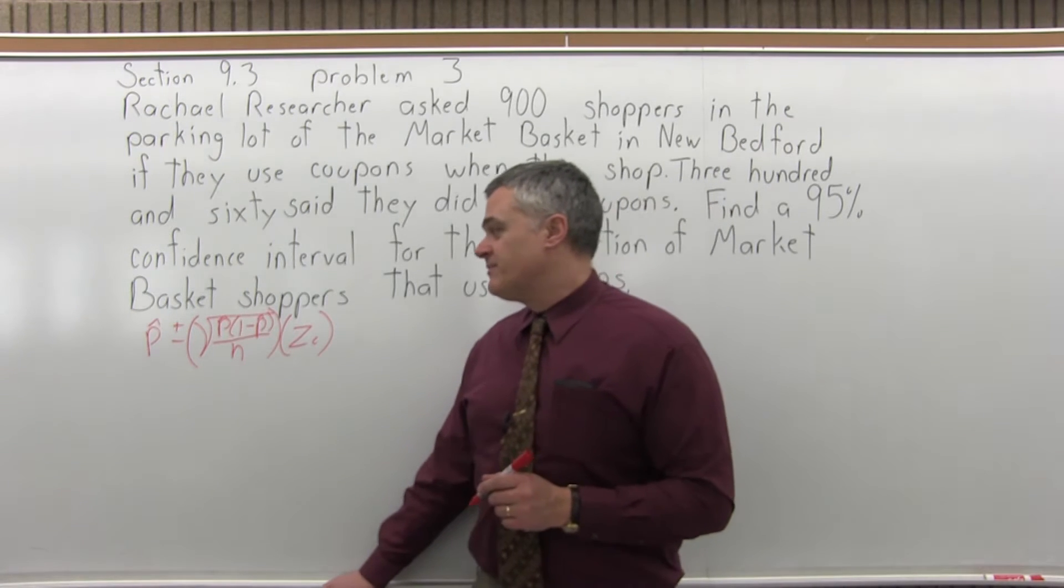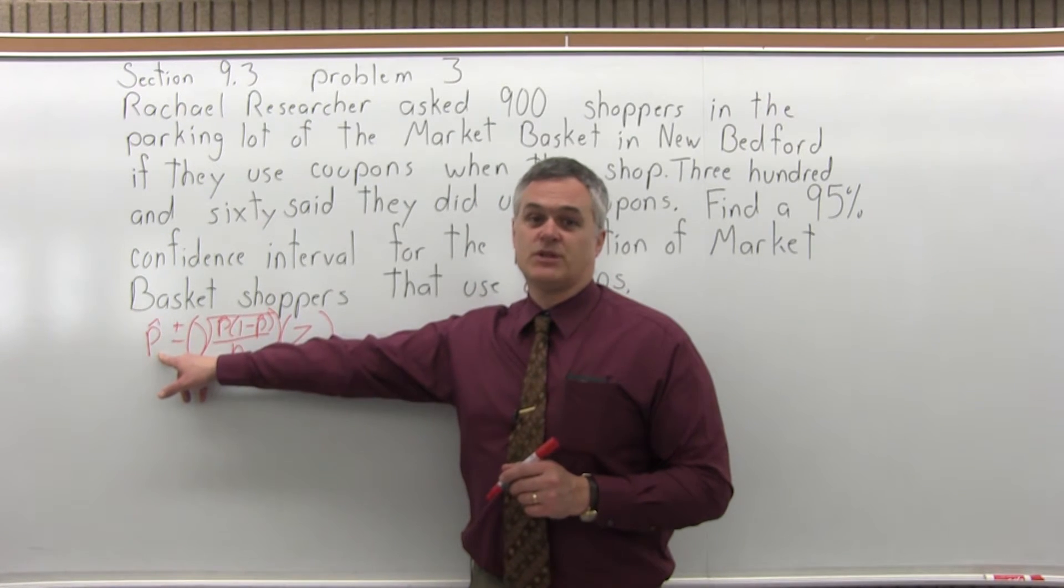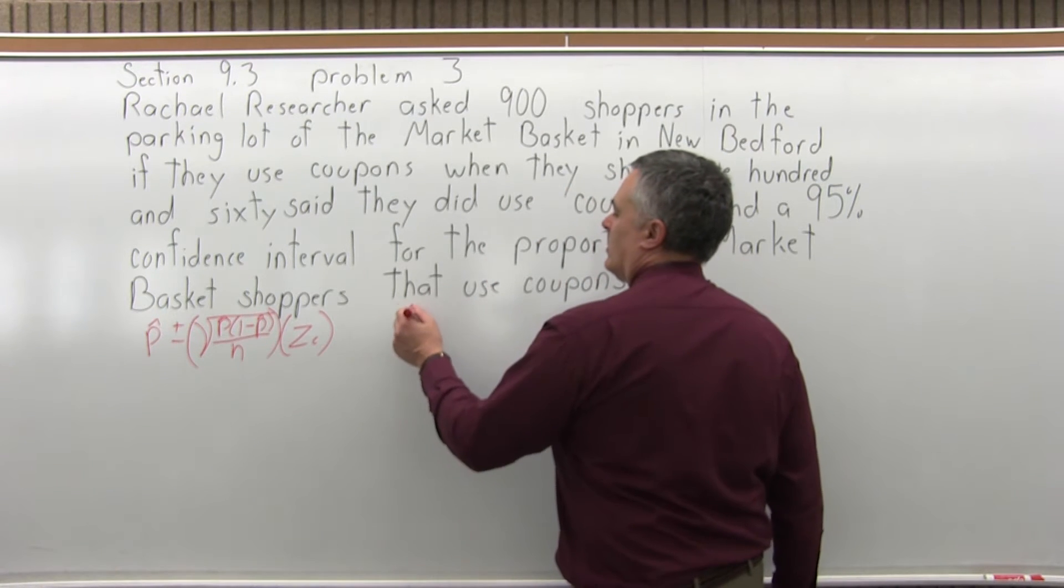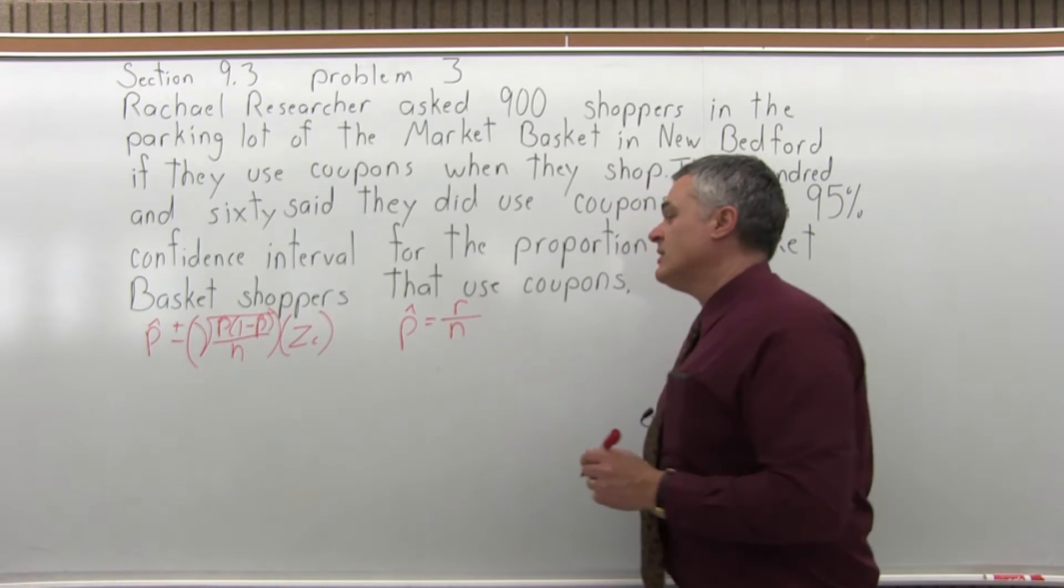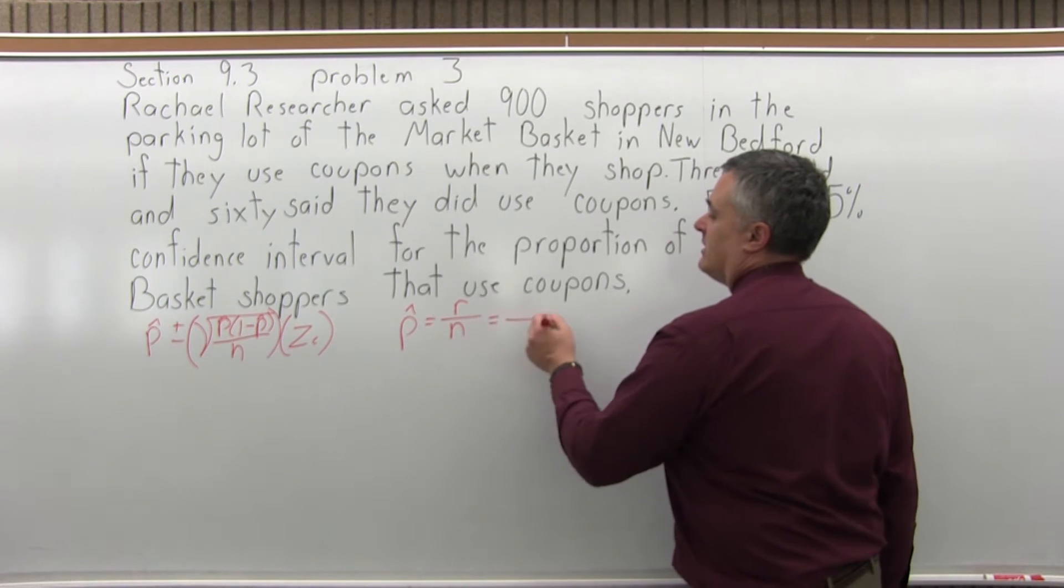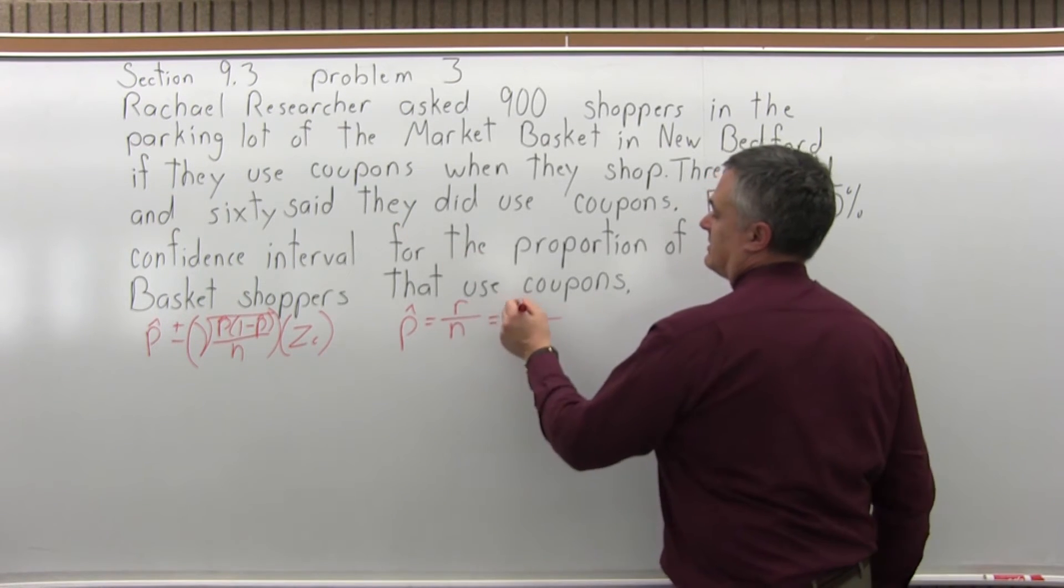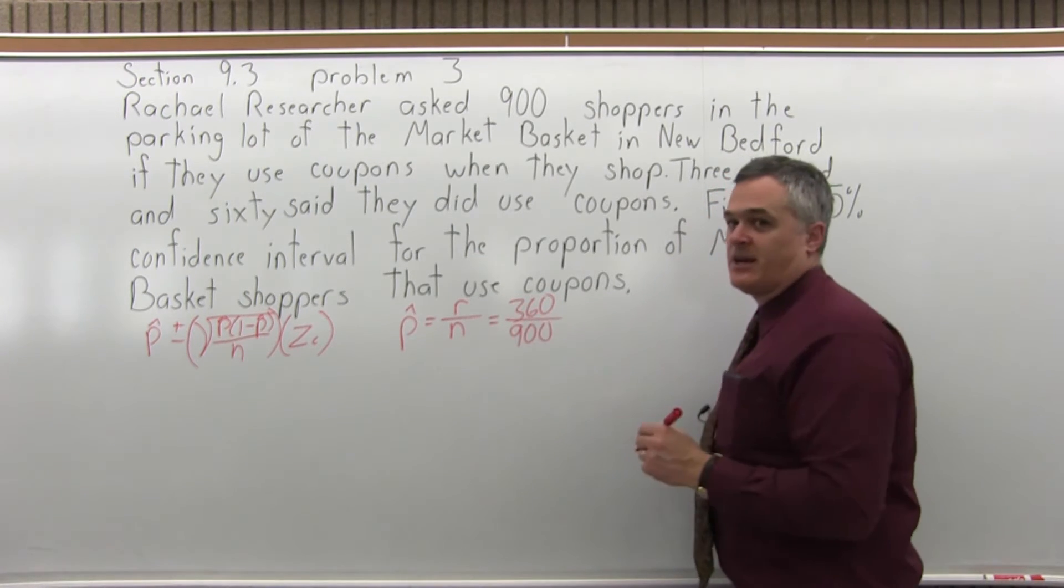First of all, p hat is the population proportion that we're estimating. So p hat will be r, the number of successful results, over n, the total number of trials. In this case...